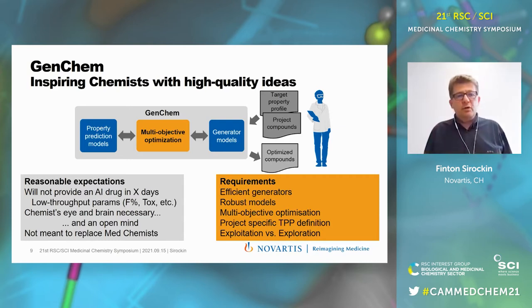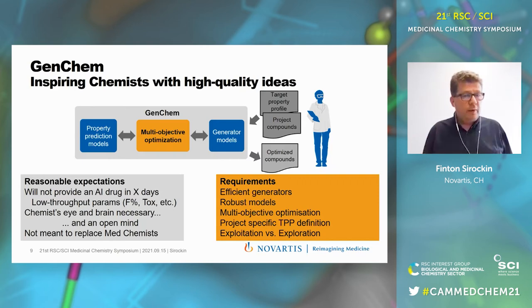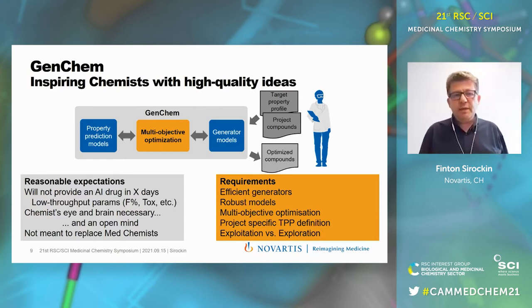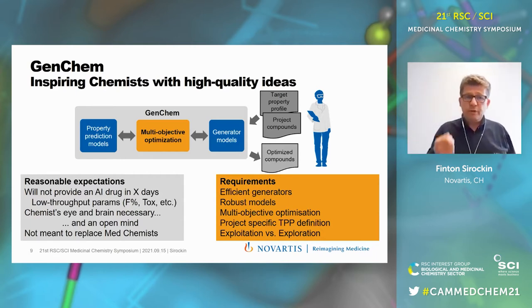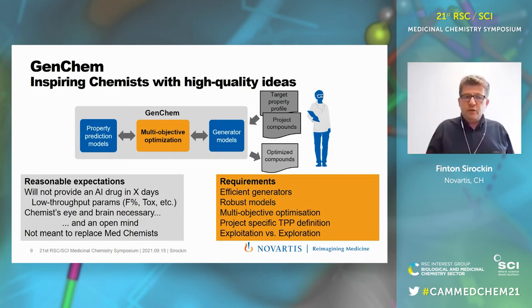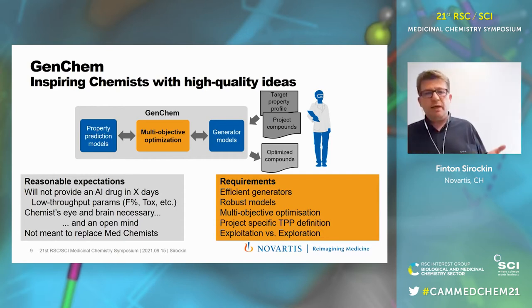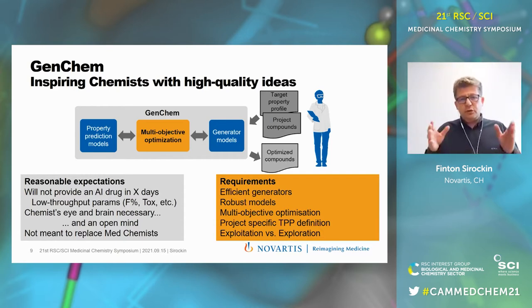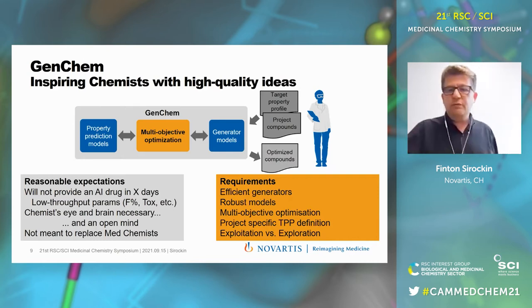It's important to be realistic about expectations. We don't think this will produce an AI drug in the near future, because there are low-throughput parameters like bioavailability and toxicity for which we usually have very few experimental data, making it very difficult to build predictive models in the context of a specific medicinal chemistry series. We also think the chemist's brain is necessary to analyze results. A GenChem approach should not just generate molecules and throw them over the fence — it's important for chemists to keep an open mind, as some ideas may be exotic. Such a tool is not meant to replace the medicinal chemist, but to generate high-quality ideas to be considered in the context of a project.